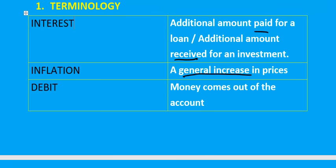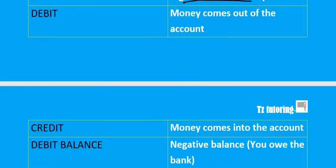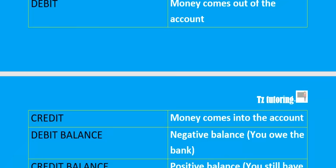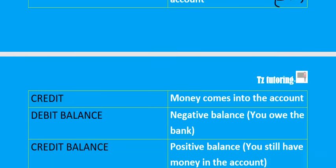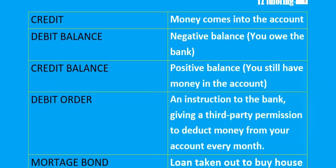Inflation is the general increase in prices. Debit means money is coming out of the account, so a debit will usually be negative because money is leaving the account. A credit is money coming into the account, so a credit will be positive.